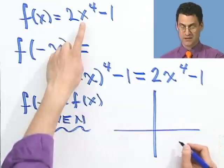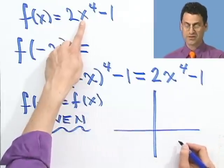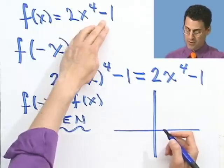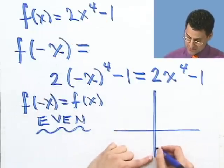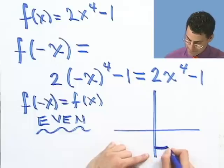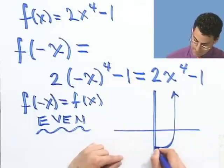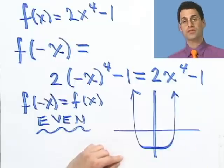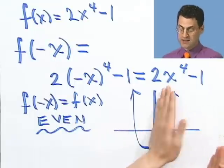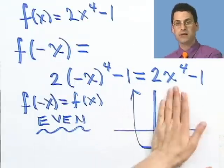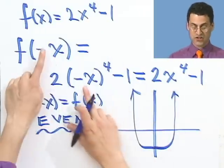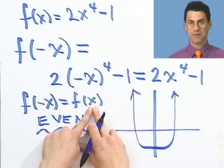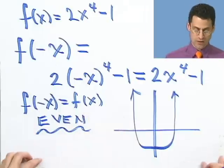What does the graph look like? It's a degree-four polynomial, so it looks like a parabola that's been a little bit sharpened. I shift it down by 1 and elongate it slightly. You can certainly see it is symmetric to the y-axis. I confirmed that just by checking f(-x) and seeing it's the exact same as f(x).